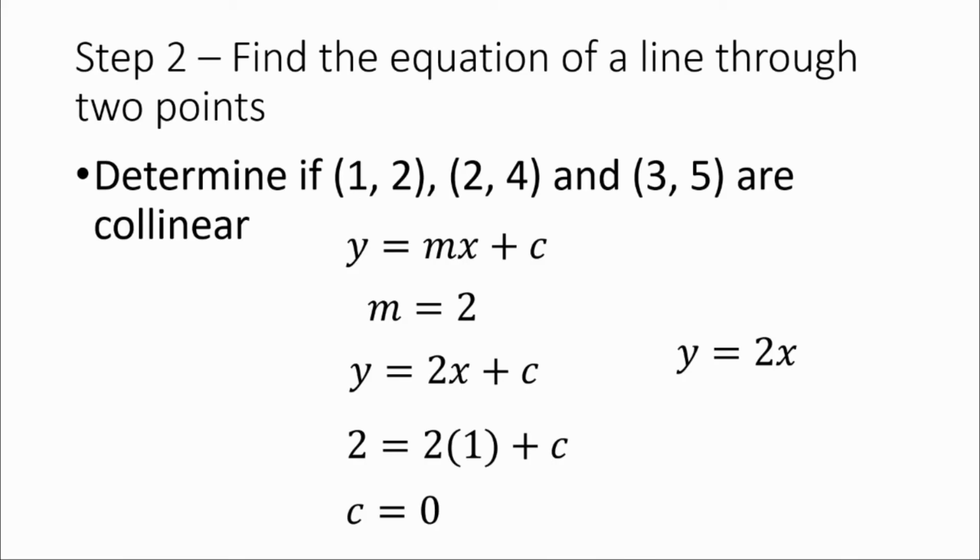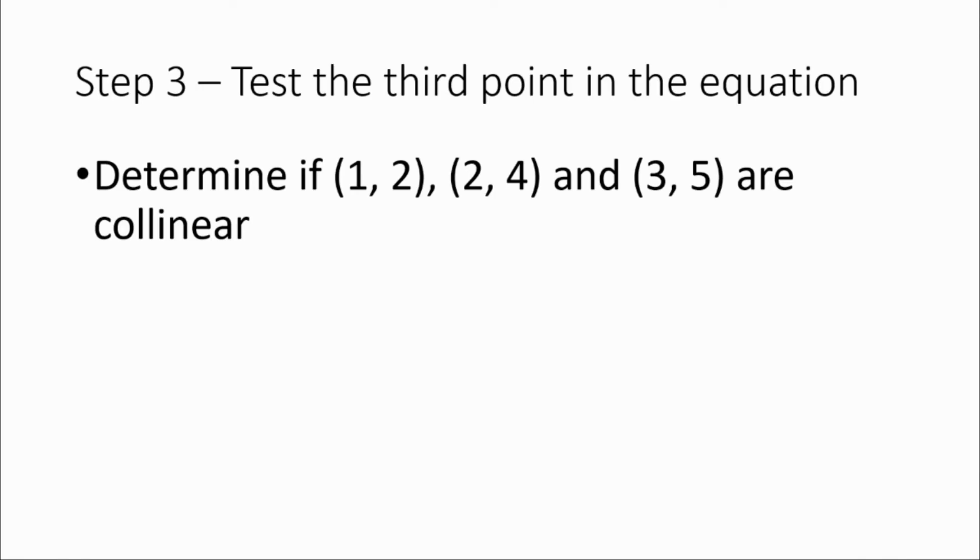The next thing we need to do is test our third point against that equation. We've got our points, and we've got our equation, y equals 2x. The third point is (3, 5), and we're asking the question, is (3, 5) on this line, or is it not on this line? If it's not on the line, then it's not going to be collinear. If it is on the line, that tells us that that point is collinear. All three points would be on the same line.